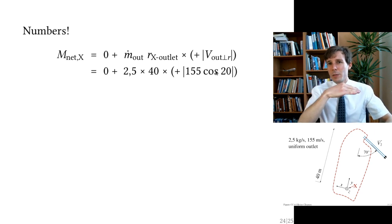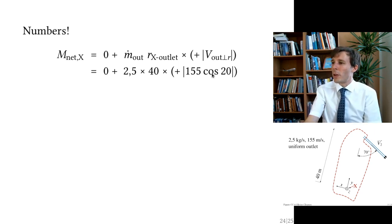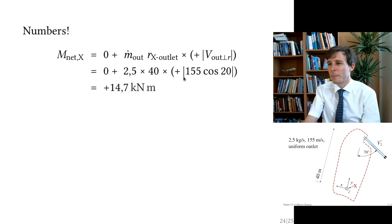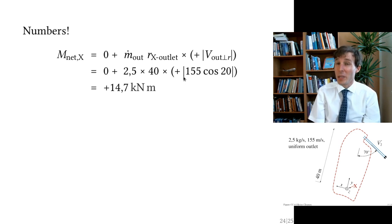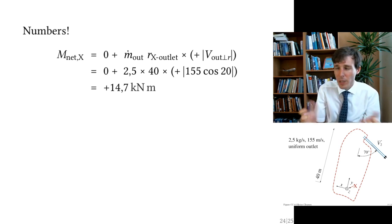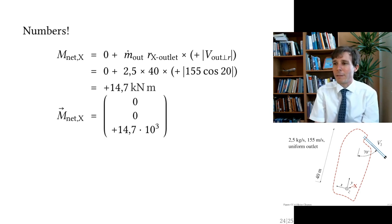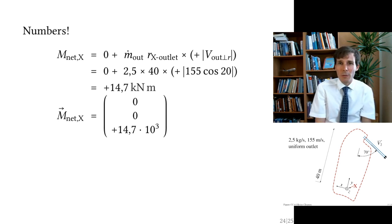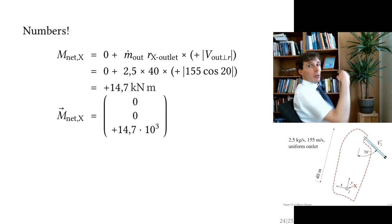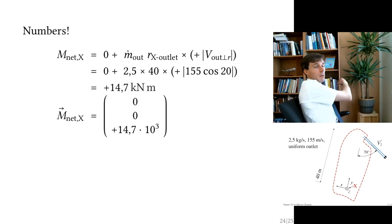Multiplying through gives +14.7 kN·m. This is the magnitude of the moment. Expressed as a vector, it is positive in the z-direction, meaning the moment vector points out of the screen.